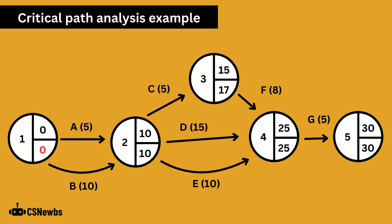And now we're back at the beginning, taking away the 10 days of activity B from node 2 to give us 0. The starting node is always going to have a value of 0 for both the earliest start time and the latest finish time.